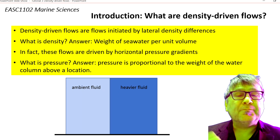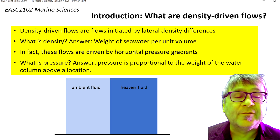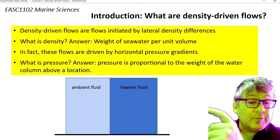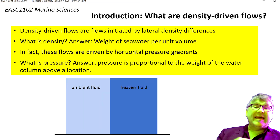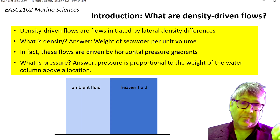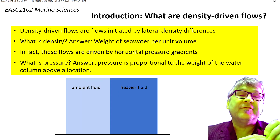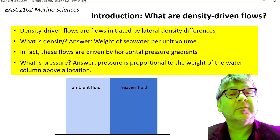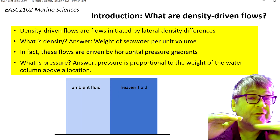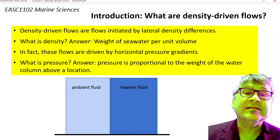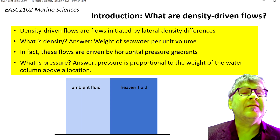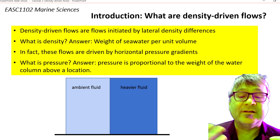What is pressure? Pressure is proportional to the weight of the water column above a location. So anywhere within the fluid tank, the pressure you experience relates to the weight of water above you. A horizontal pressure gradient is when pressure changes along a horizontal line — gradient means a change, or a contrast, or a difference.